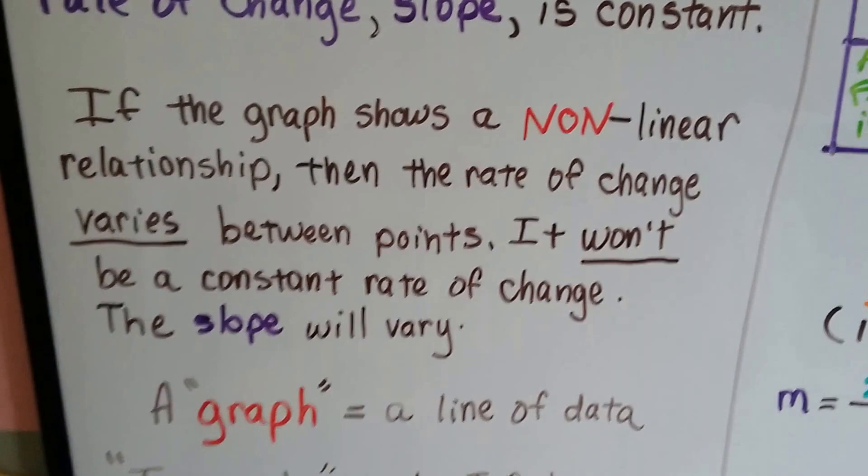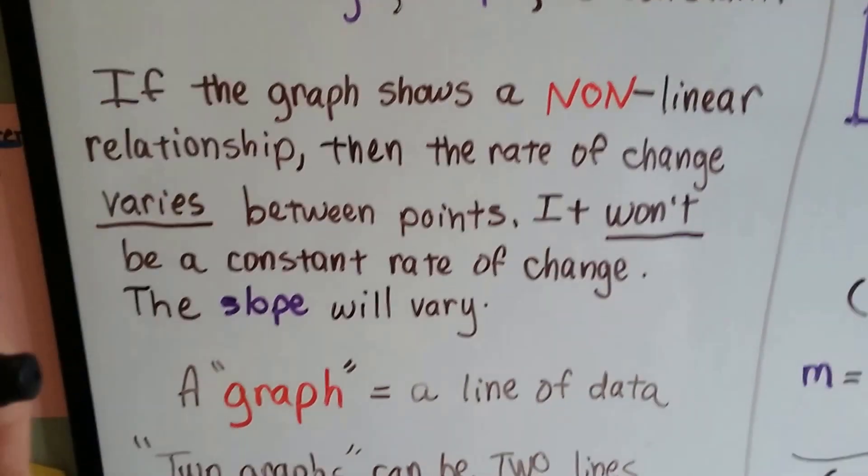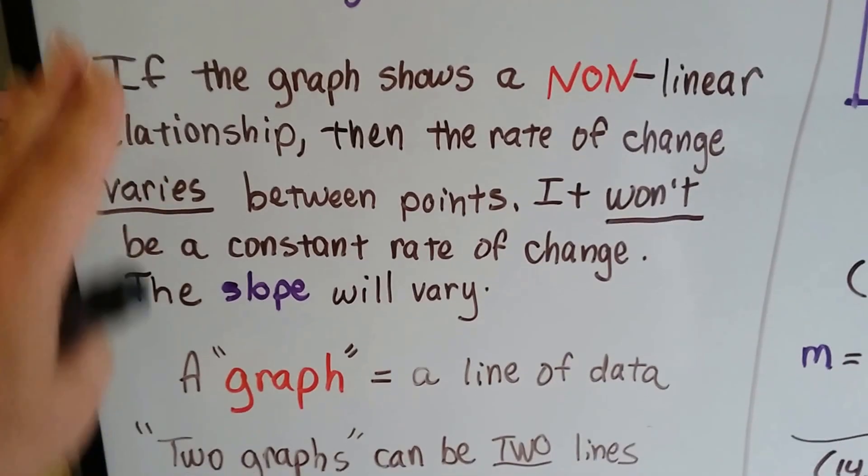If the graph shows a non-linear relationship, then the rate of change varies between the points, and it won't be a constant rate of change. The slope will vary.